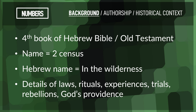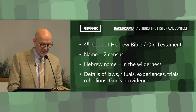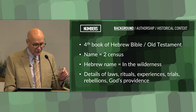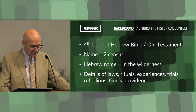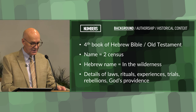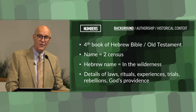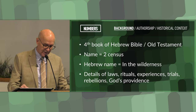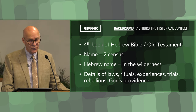The book of Numbers, the fourth book of the Hebrew Bible in the Christian Old Testament, chronicles the Israelites' wanderings in the wilderness on their journey from Mount Sinai to the promised land of Canaan. Its name originates from two censuses of the Israelites recorded in the text, but its Hebrew title, 'In the Wilderness,' more accurately captures its content. The book details the laws, rituals, and experiences of the Israelites, including their trials, rebellions, God's provision, and His guidance throughout their journey.